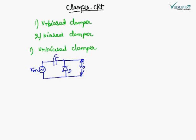This is an Unbiased Clamper — there is no external battery used. In the positive cycle, the diode is reverse biased, so there will be no current in the circuit. In the negative cycle, when the input polarity reverses, the diode is forward biased and current will flow in the circuit.